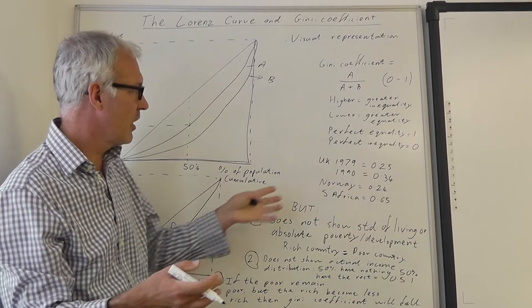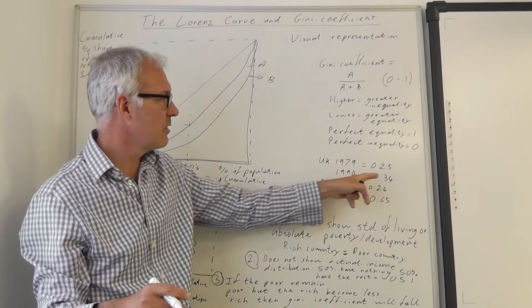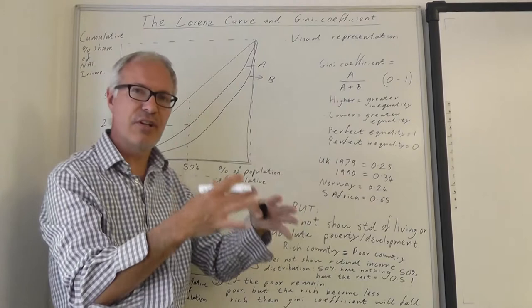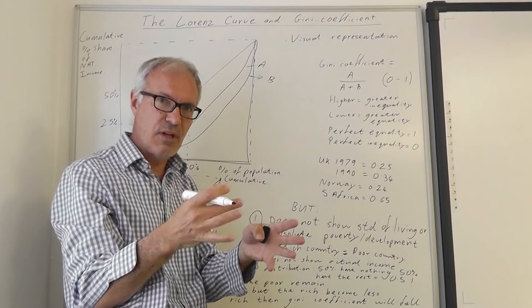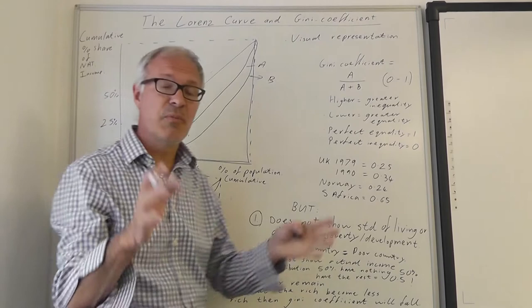The Gini coefficient for the UK in 1979, before Margaret Thatcher was elected Prime Minister and introduced various market-based supply side policies, was 0.25. By 1990, it reached 0.34. If you have a welfare state, if you have progressive taxes, and you redistribute from the top to the bottom, what would it do to the Gini coefficient? It will lower the Gini coefficient, which is kind of the reverse of what was done in the 80s.